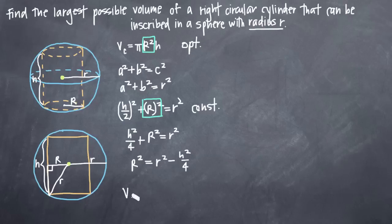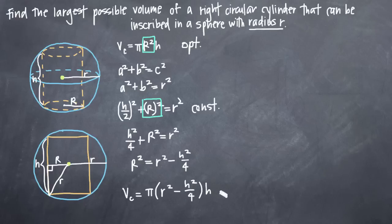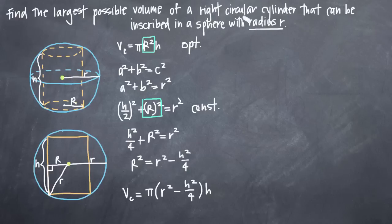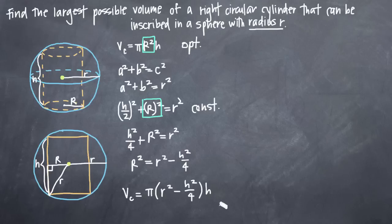Plugging in, the volume of the cylinder equals pi times (r squared minus h squared over 4), all multiplied by h. Our volume equation is now in terms of one variable only. You might think there are two variables because you see lowercase r and h — however, lowercase r is a constant because it's the radius of the sphere, which never changes. So our volume equation has only one variable, h; r is treated as a constant.